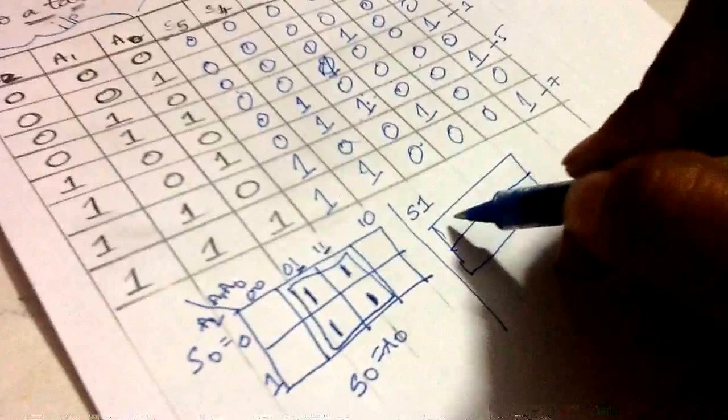Now let us do for S1. S1 is 0. Let's go for S2. 2 and 6 are here. 2 and 6.